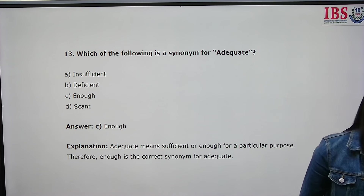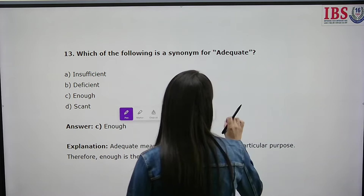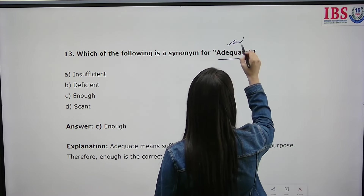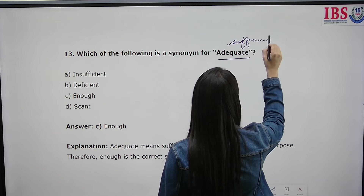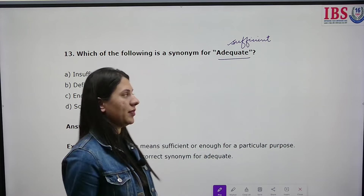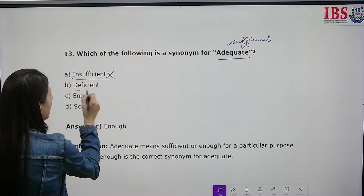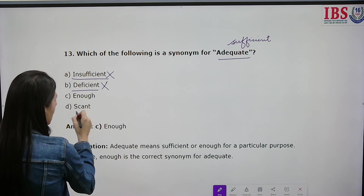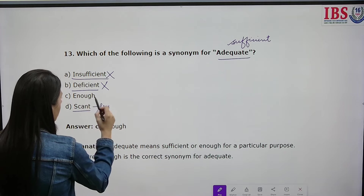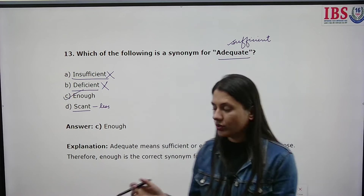Which of the following is a synonym for 'adequate'? Adequate means sufficient — enough for what is needed. The options are sufficient, insufficient, deficient, and scant. Insufficient is its opposite — an antonym. Deficient and scant both mean very less. Sufficient means enough, as in 'I have enough' or 'I have sufficient.' So sufficient is the correct synonym.